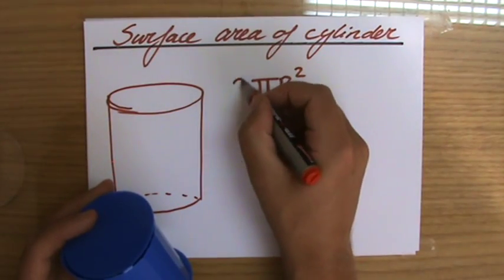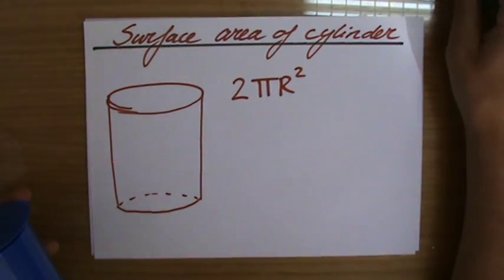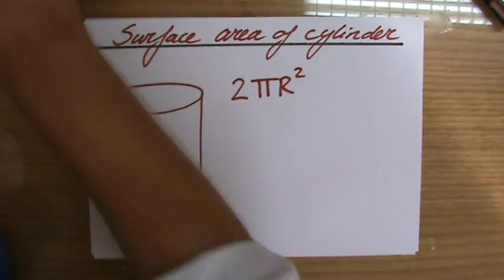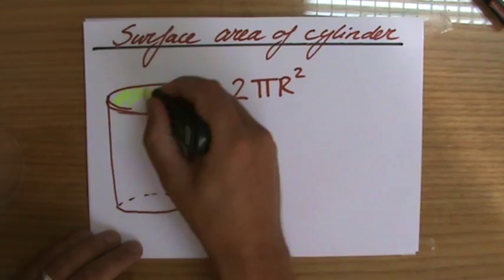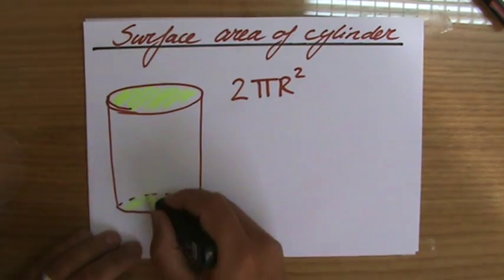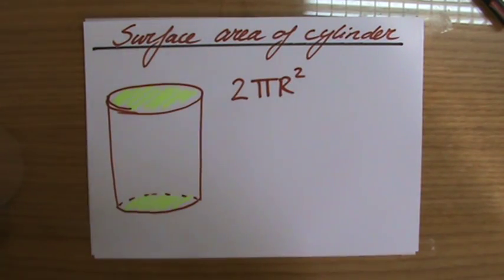So it is two times pi r squared. And that will be the top and that will be the bottom. And I deliberately emphasize the two times pi r squared. Why is that?